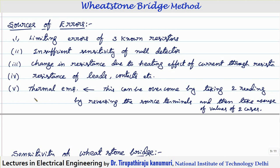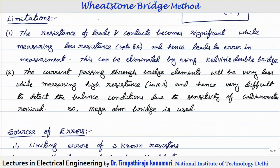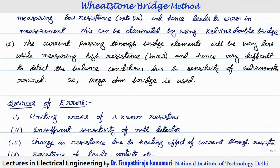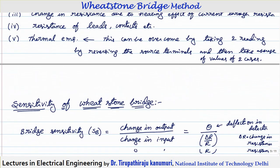There is one more problem: thermal EMF induced in the components of any electrical circuit, which may also lead to errors. To eliminate the effect of thermal EMF, take one reading with the standard connection shown, then reverse the terminals of the supply E (plus and minus swapped), adjust the bridge again, and measure the value of unknown resistance again. Let the first reading be R1 and the second be R2. Take the average (R1 + R2)/2 — since in one case the thermal EMF adds and in the other it subtracts, the resultant is nullified.